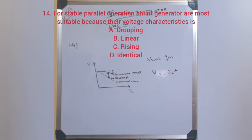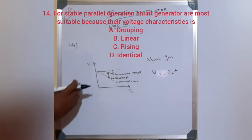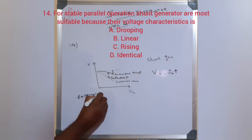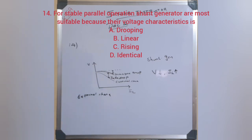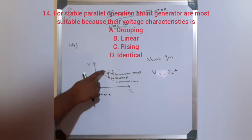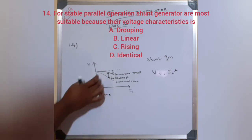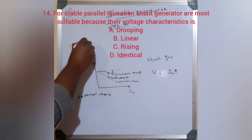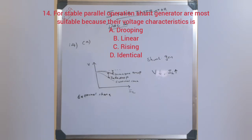The answer is 'dropping.' The series generator has a rising characteristic. For the shunt generator, the external characteristic — the V versus IL plot — shows a dropping terminal voltage as load current increases due to armature drop (IA × Ra). Because of this drooping external characteristic, the shunt generator is stable for parallel operation. Option A is correct.